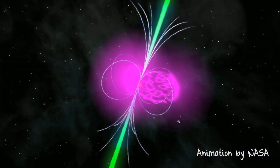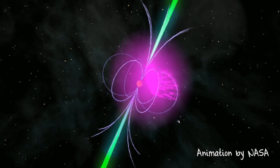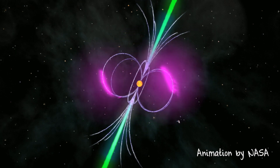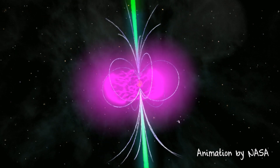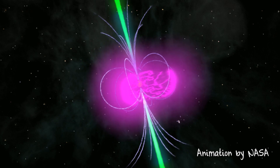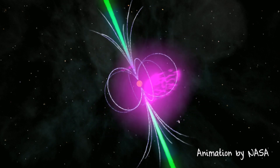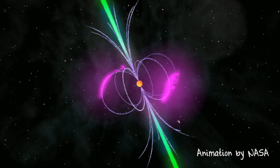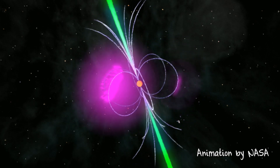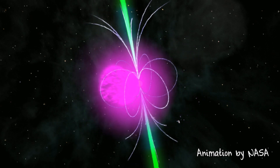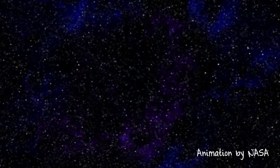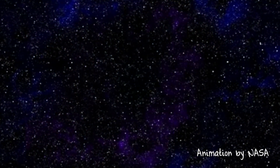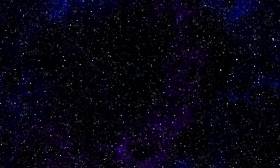Think of pulsars as cosmic lighthouses. As a pulsar spins, the radiation — or the light — sweeps across space, and if that light reaches Earth, to us it will appear as a pulsing light in the night sky. Hence the name pulsar.